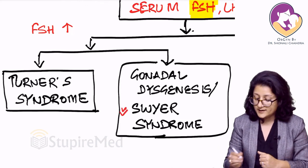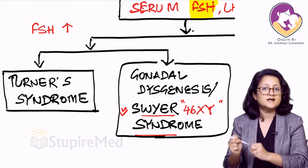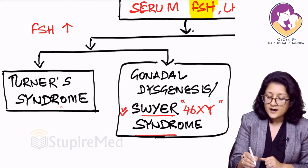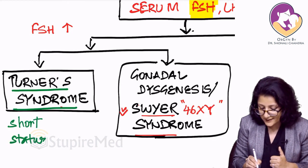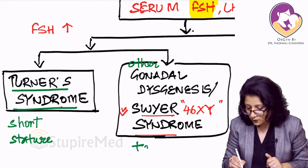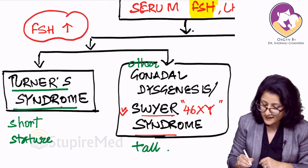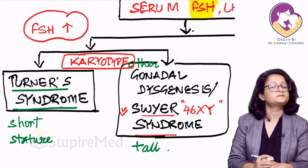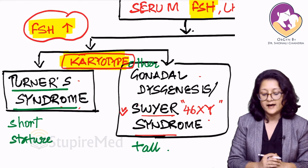There is one specific type of gonadal dysgenesis called Swyer syndrome, which is 46XY karyotype — a 46XY female whose gonads are dysgenetic, so they develop as females. Clinically, Turner's syndrome presents with short stature, while other gonadal dysgenesis including Swyer syndrome presents with tall stature. When FSH is raised, that is the time to go for a karyotype to identify which type of gonadal dysgenesis is present.